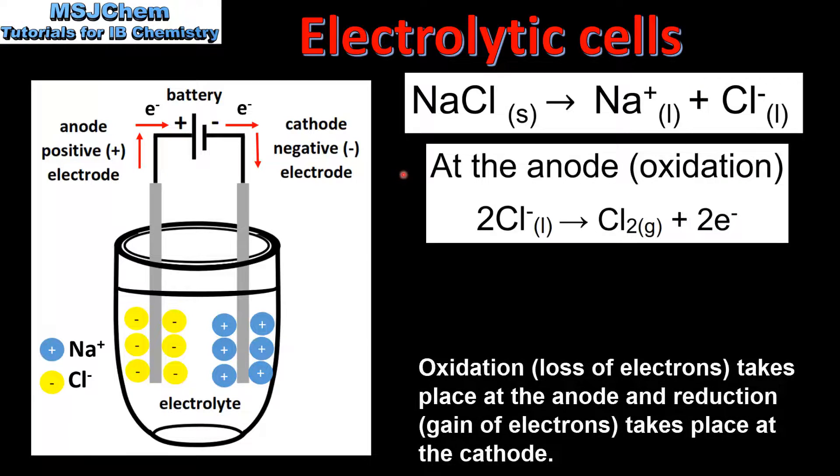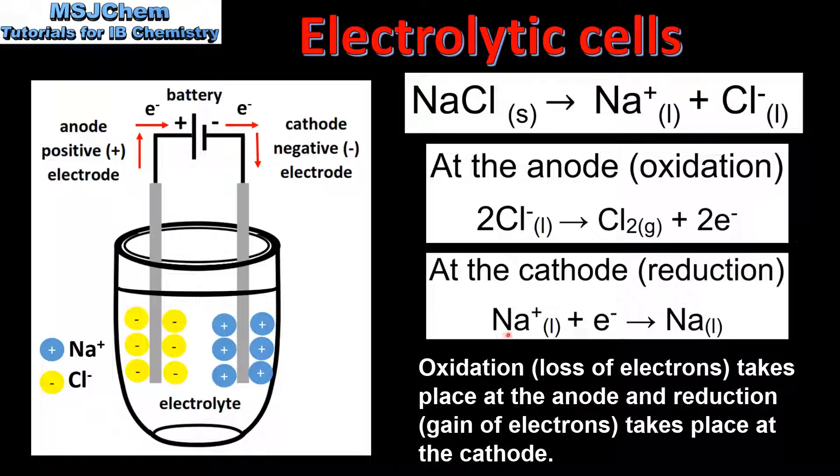Here we have the half equation for the reaction that takes place at the anode. At the anode, chloride ions lose electrons, which is oxidation, to form chlorine gas. At the cathode, sodium ions gain electrons, which is reduction, to form liquid sodium.